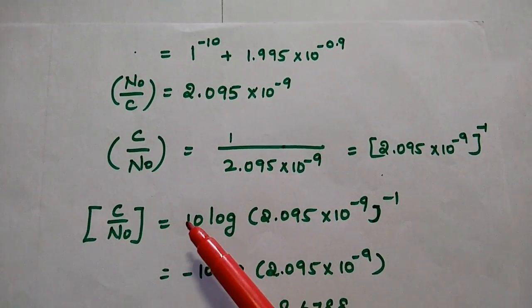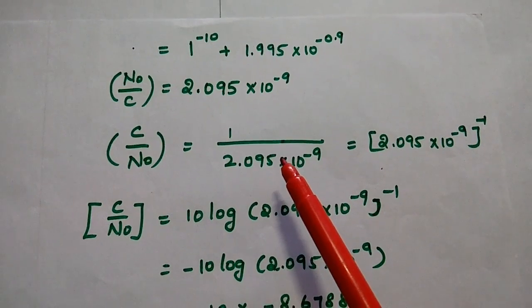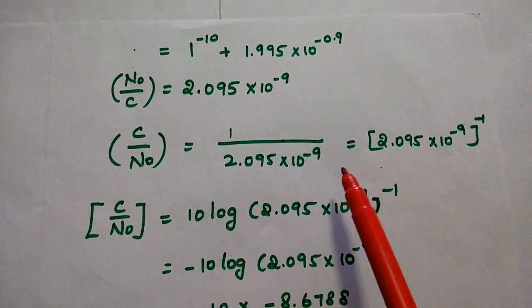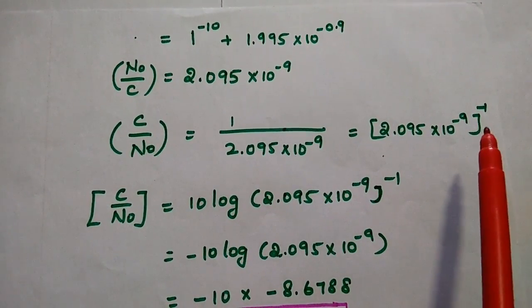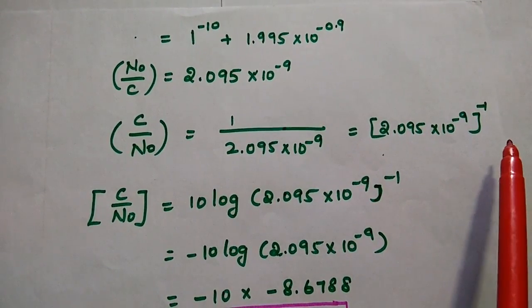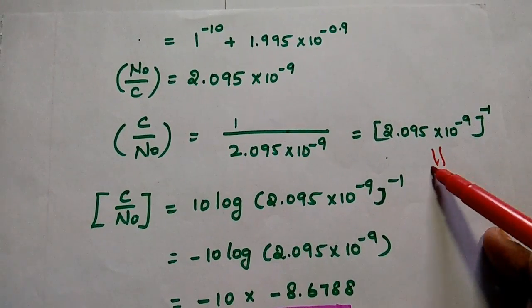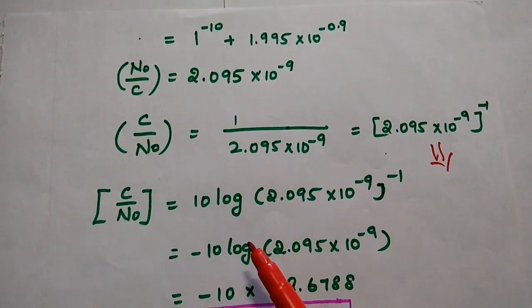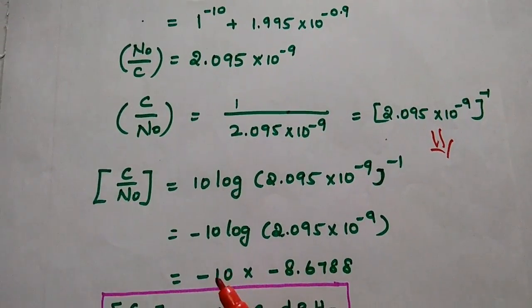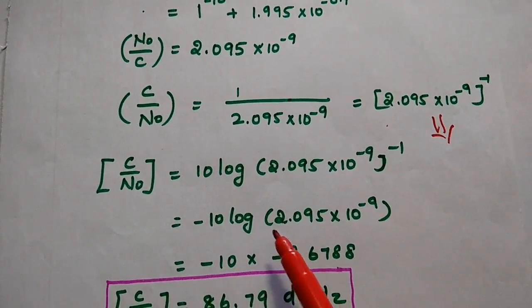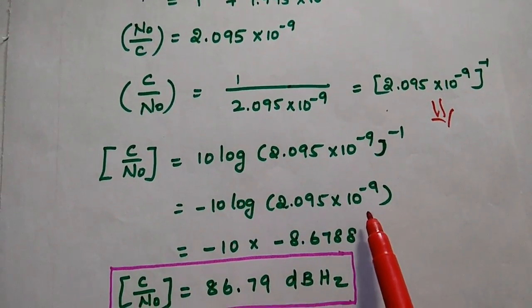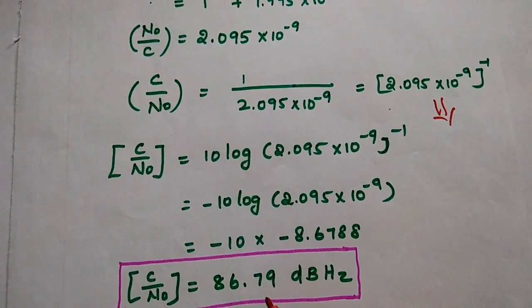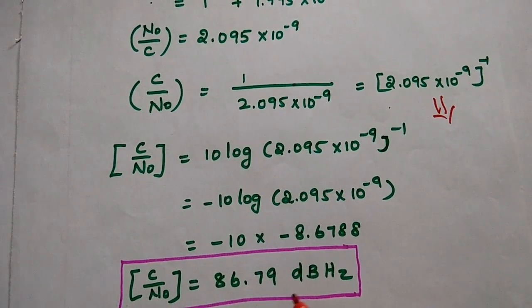To get the carrier-to-noise power, we take the inverse: C/N = (2.095×10^(−9))^(−1). Converting to dBHz, we take 10·log of the inverse, which gives −10·log(2.095×10^(−9)). The answer is 86.79 dBHz.